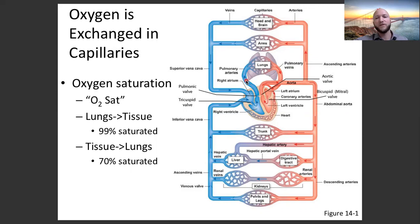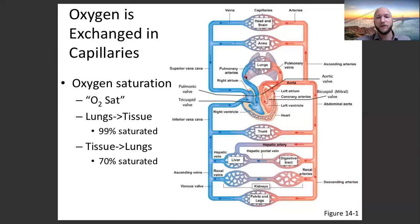At about 70% oxygen saturation, blood flows back to the right side of the heart — right atrium, then right ventricle — which pumps it into the pulmonary arteries. Pulmonary arteries have around 70% saturated blood, relatively low saturation. Important distinction: pulmonary artery has low oxygen saturation, while the aorta and systemic arteries have high oxygen saturation. This is a common test question — pulmonary artery: low oxygen saturation; aorta and systemic arteries: high oxygen saturation.